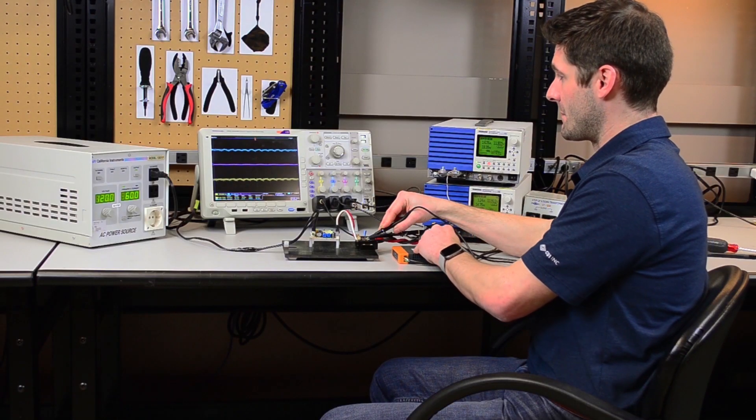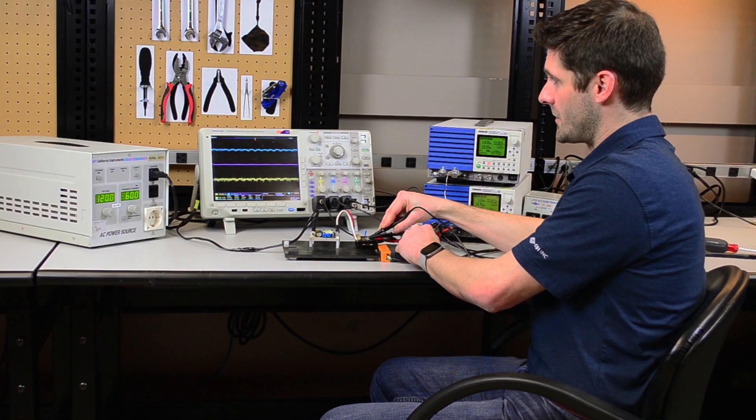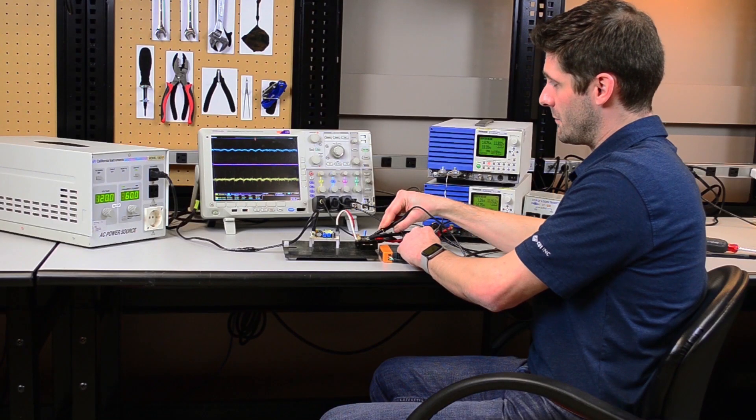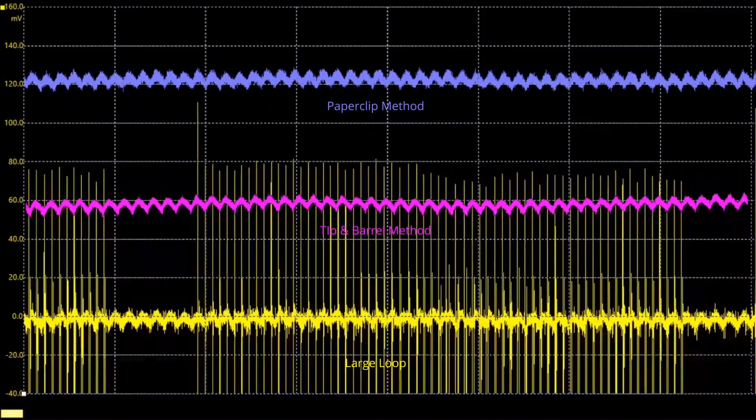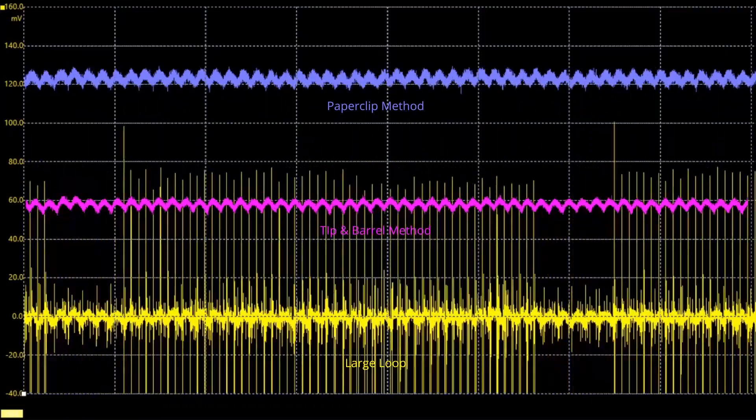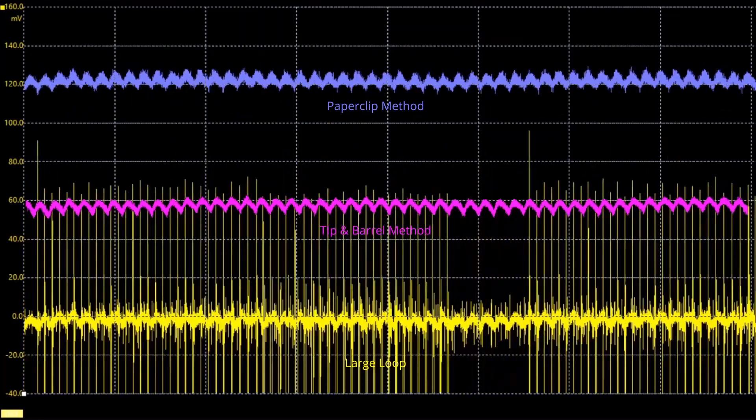Sliding around the second power supply, you can see the external noise being picked up by the probe with the large loop. Our probe where we employed good probing methods is not picking up this noise, and it's a good indication that what we're seeing is really the ripple and noise and nothing external to the power supply.